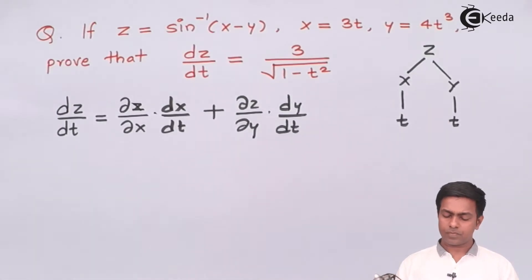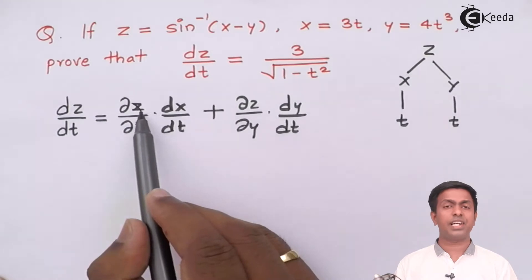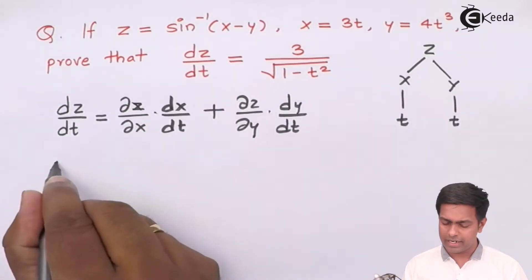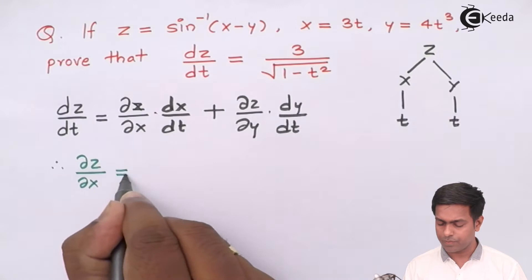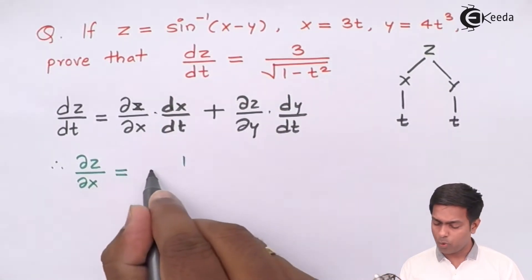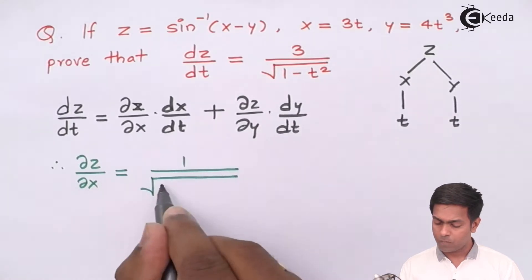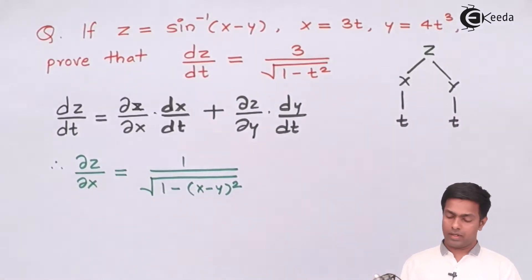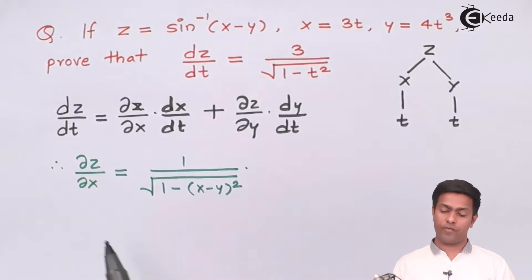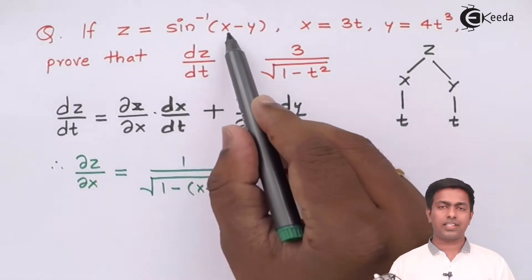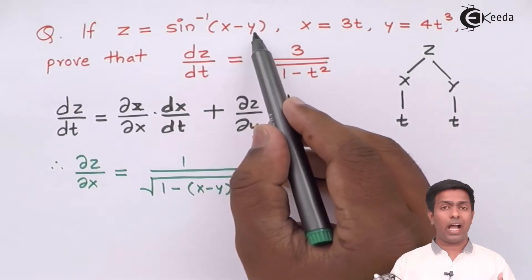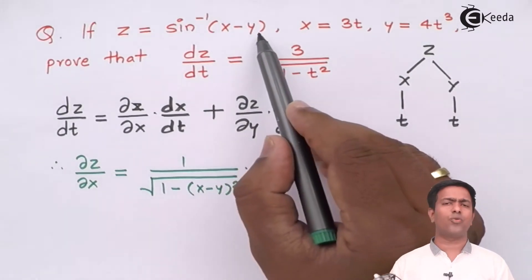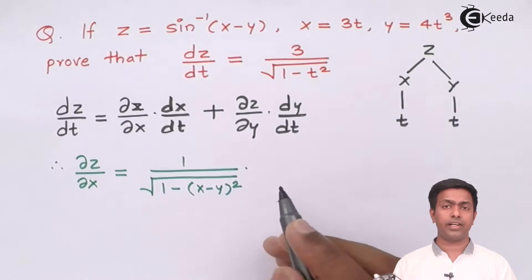First, let's find ∂z/∂x by differentiating z with respect to x partially. The derivative of sin inverse is 1 over the square root of 1 minus (x minus y) squared, multiplied by the derivative of (x minus y) with respect to x. The derivative of x is 1 and y is treated as constant giving 0, so the result is 1 over √(1 minus (x minus y)²).